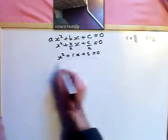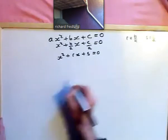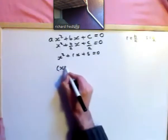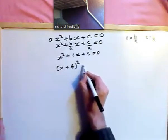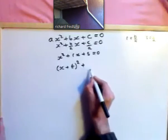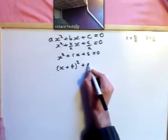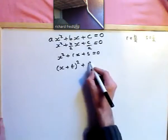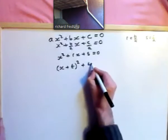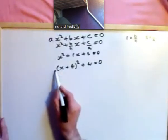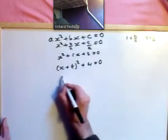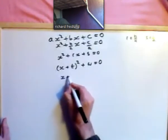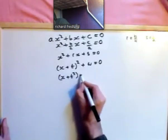Now, to solve this, what we're going to do is rewrite it in the form x plus something — let's call it t — all squared, plus some other number, let's call it w, is equal to zero. If we can rewrite it in this form, then we can solve it because we'd have x plus t squared equal to minus w.